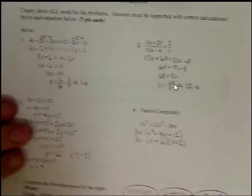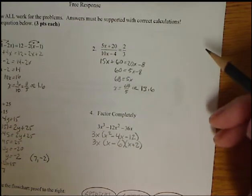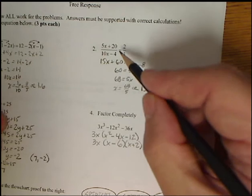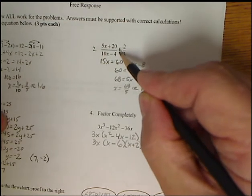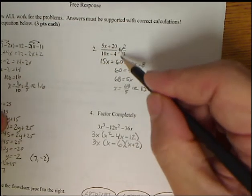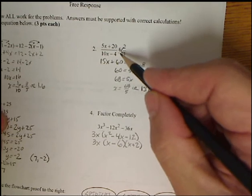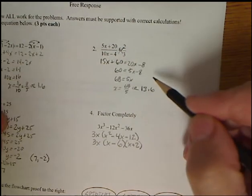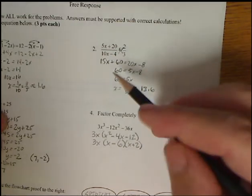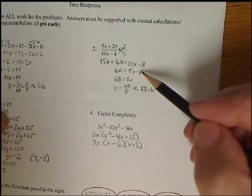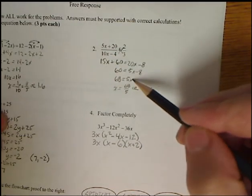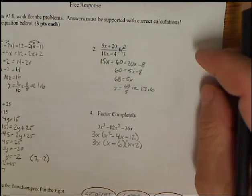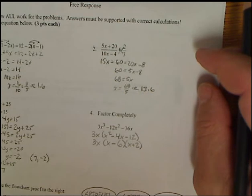For the second type, we need to see about cross-multiplying. So if you just cross-multiply here, we have 15x plus 60 is equal to 20x minus 8. Now again, we just want to move our x's to one side, so I subtracted 15x from both sides, added 8, get 68 equals 5x, then we divided by 5. You can leave your answer as 68 over 5, or you can give a decimal answer like 13.6.